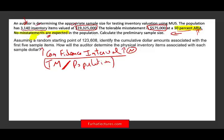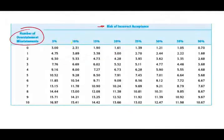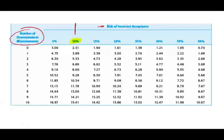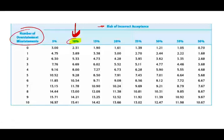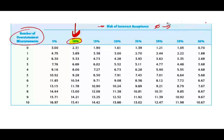A 10% ARIA means we are 90% confident that what we're doing is correct — there is still a 10% chance we could make the incorrect decision. If you want 100% confidence, the risk of incorrect acceptance would be zero, which means no sampling at all — you'd have to look at everything 100%. Here, we are accepting a 10% chance that we could be wrong.